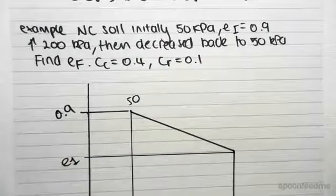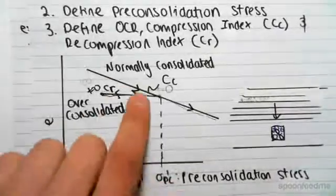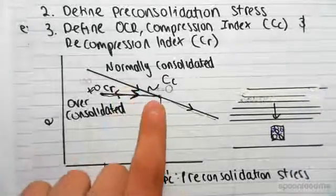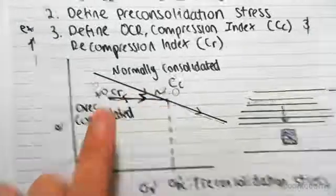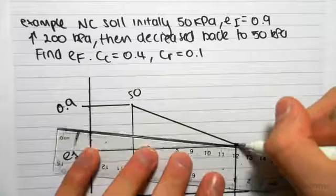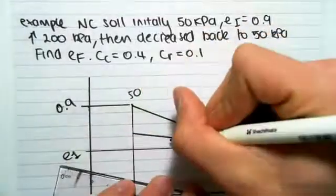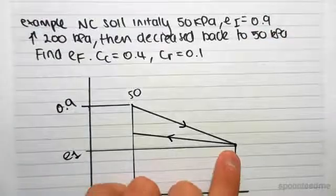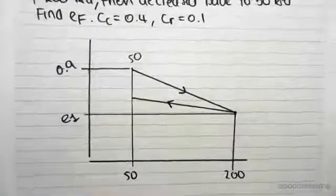Now, once again, we know that we can only go down the normally consolidated line. We can never go up it. So it means that we're going to be going up the over-consolidated line. We're going to be drawing a line at a different gradient. This is our path. That would be the pre-consolidated stress down there at 200 kPa.